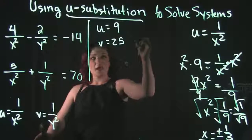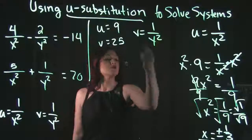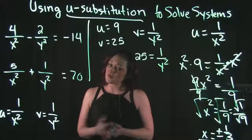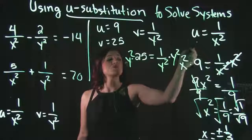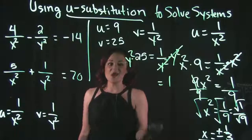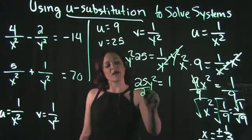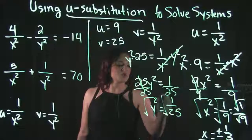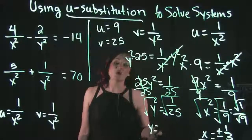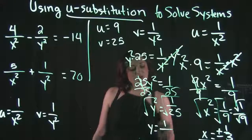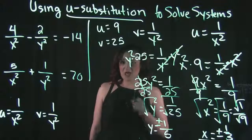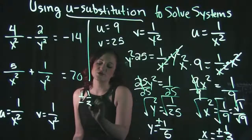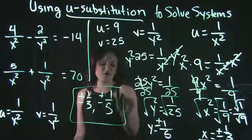We repeat this process for v. Since v equals 1 over y squared and v is 25, we have 25 equals 1 over y squared. Multiplying both sides by y squared gives 25y squared equals 1, so y squared equals 1 over 25. Taking the square root of both sides gives y equals plus or minus 1 fifth, since the square root of 25 is 5. So our final solution to this system is x equals plus or minus 1 third, y equals plus or minus 1 fifth.